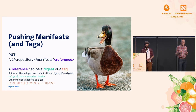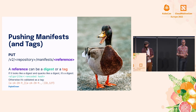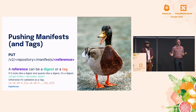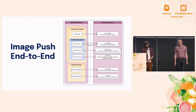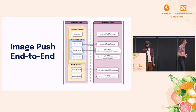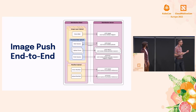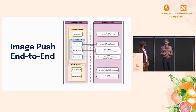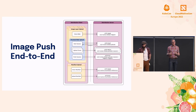If you push using a tag, that implicitly creates the digest reference in the registry as well, because everything in the registry is identified by the hash of its contents. So if you push by a tag, you now have two ways to refer to your manifest. End-to-end, the image push looks like: check if each layer exists using HEAD, push the layers that need pushing using the POST-PATCH-PUT chunked upload, then push the manifest using either a tag or digest.